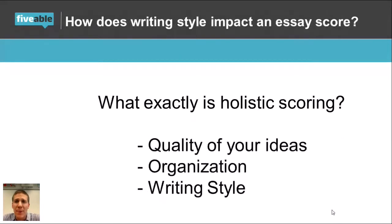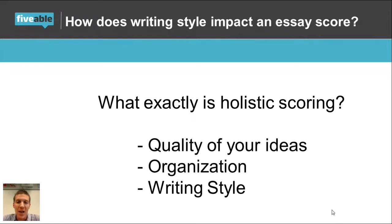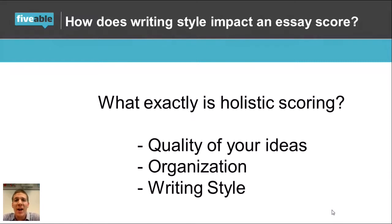How does writing style impact an essay score? Holistic scoring means you get one score on a one-to-nine scale for each essay — analysis, synthesis, and analytical essay. The goal is a five or higher to get a three on the AP exam. If you're pushing for a four or five on the AP, you want to be shooting for that seven, eight, and nine range. Nines are super rare — don't get frustrated if you never see one. Sevens are hard. Sixes are doable. And the difference between a six and a seven is often writing style.